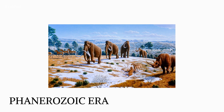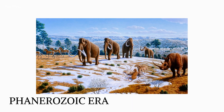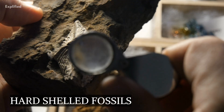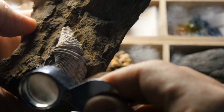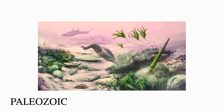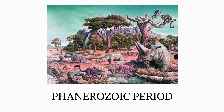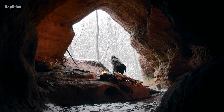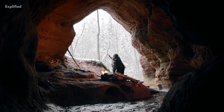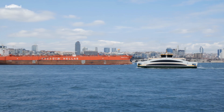The Phanerozoic Eon covers the time period from the advent of plentiful macroscopic hard-shelled fossils around 542 million years ago until the present. The Paleozoic, Mesozoic, and Cenozoic are the three eras of the Phanerozoic. Early stages lay the groundwork for succeeding stages as well as the modern world we see today. The term Phanerozoic comes from a Greek word.